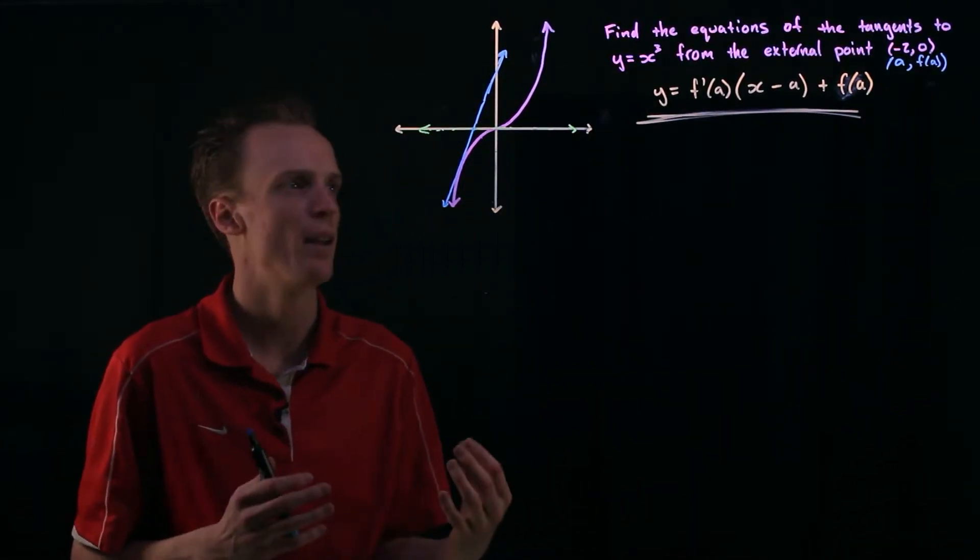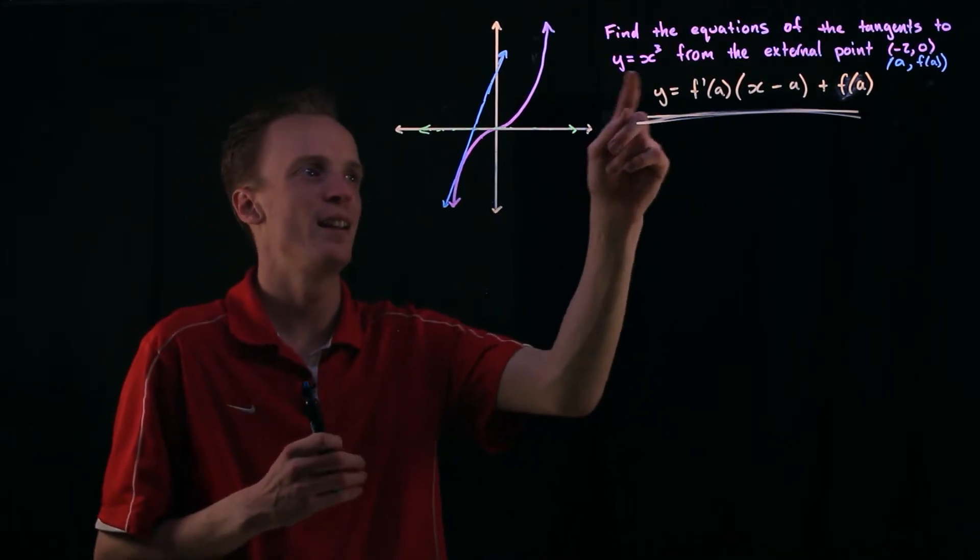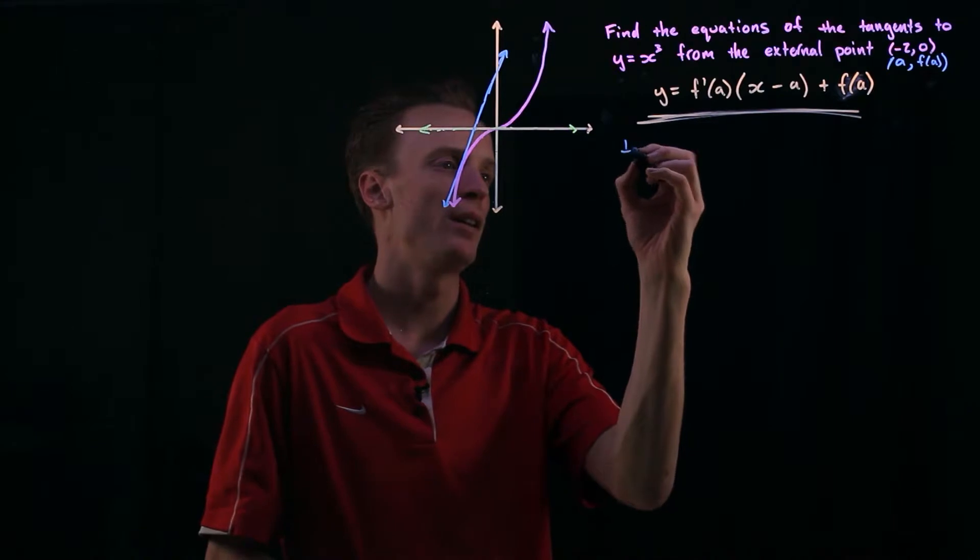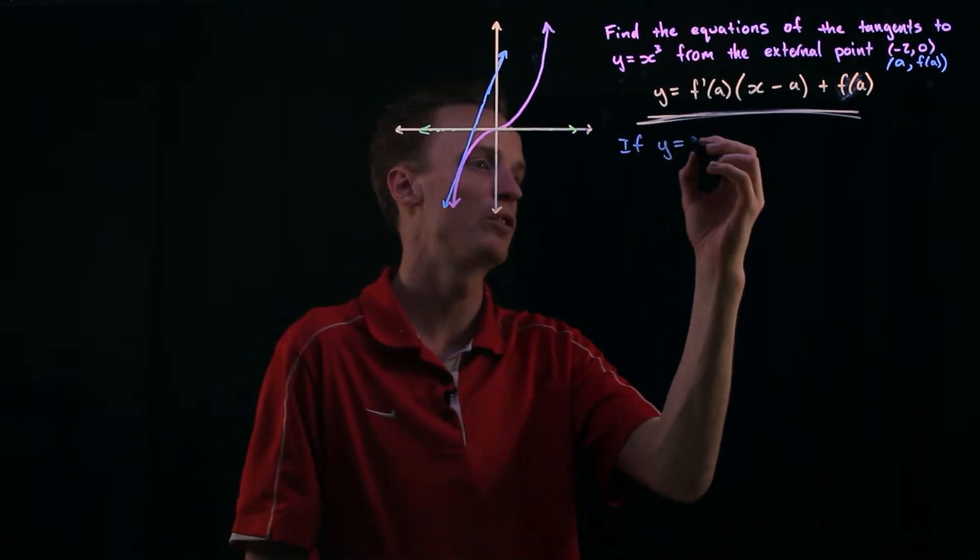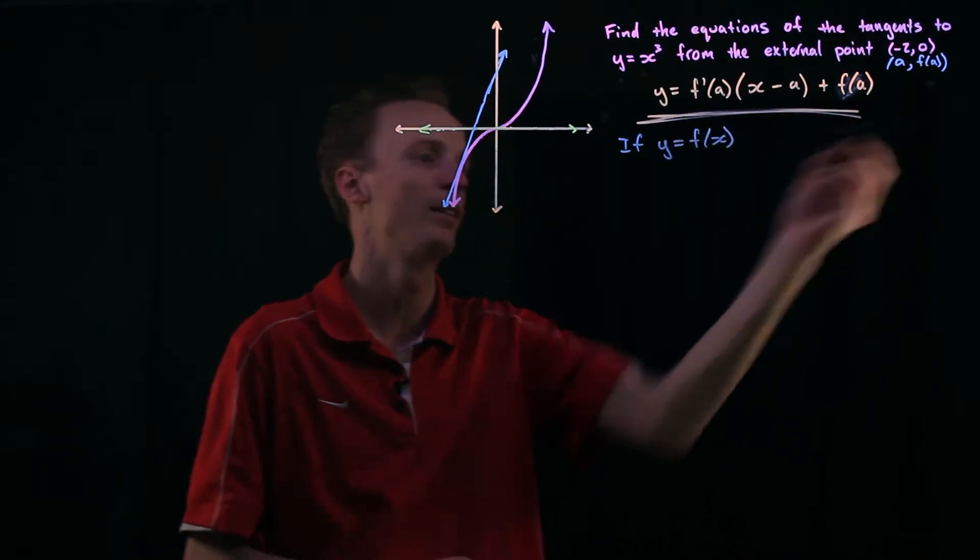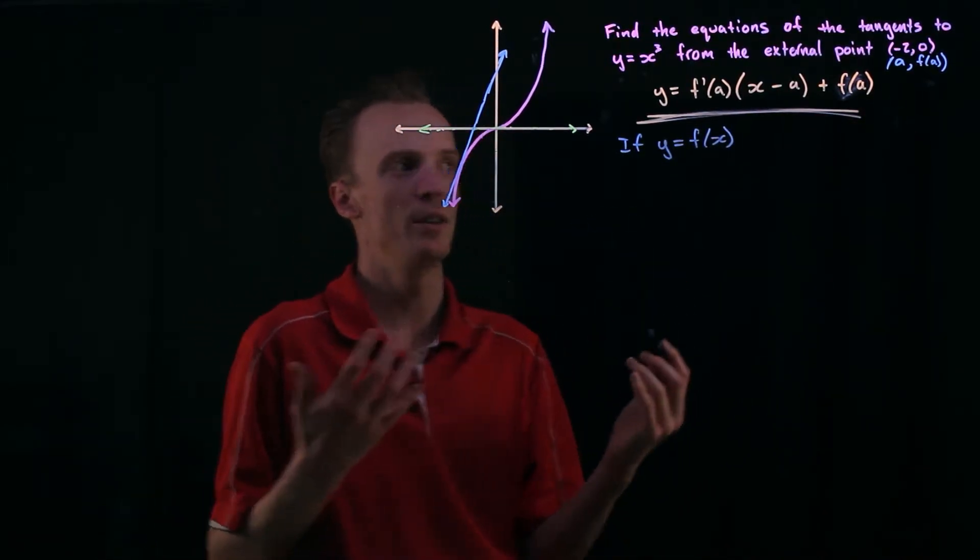So now what to do from here? Well what I'm actually going to just state here is if y is equal to x cubed, I'm going to say if y is equal to, it's x cubed but I'm going to call it the f of x to get it into this format.